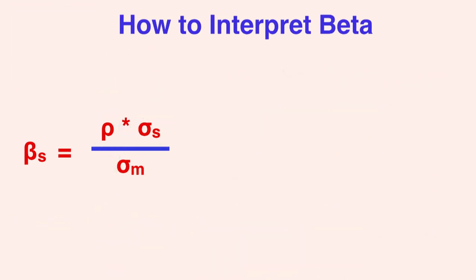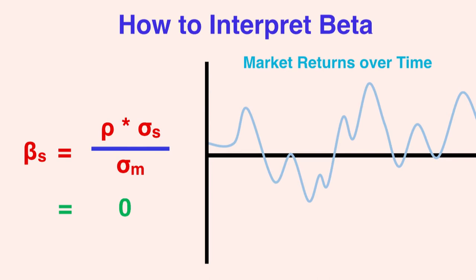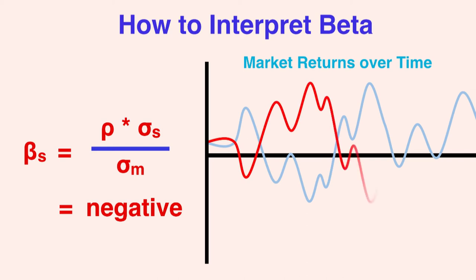A beta of 0 means that the stock is uncorrelated with the market. In other words, this means that for a given change in market returns, the stock's return would not be affected. Negative betas are also possible if the stock's correlation with the market is negative. This often happens in commodity related stocks, like gold mines. This means that when the market is performing poorly, the stock actually performs better, and vice versa. This makes sense when you think about commodity stocks like gold, because when the market performs poorly, many investors will turn to more tangible investments like gold, and thus these commodities actually perform better.